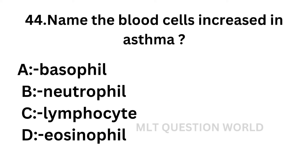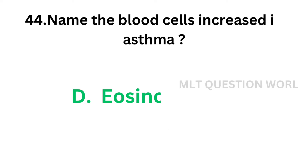Question number 44: Name the blood cell increased in asthma. Option A: Basophil, option B: Neutrophil, option C: Lymphocyte, option D: Eosinophil. Which of the following blood cells is increased in asthma? The correct answer is option D, eosinophil. Eosinophil is the blood cell which is increased in asthma.